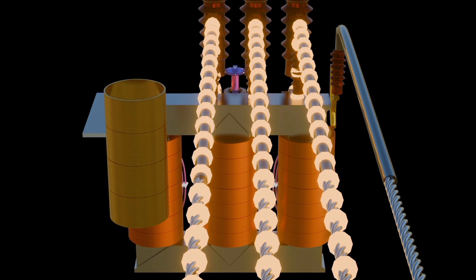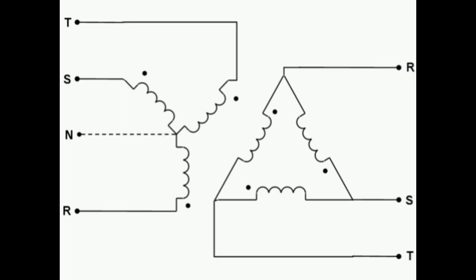The windings are connected in either a delta or Y configuration, depending on the applications. In a delta connection, one end of each winding are connected together in a triangular shape, forming a closed loop. In Y connection, one end of each winding is connected together at a common point, while the other ends are connected to respective phases.